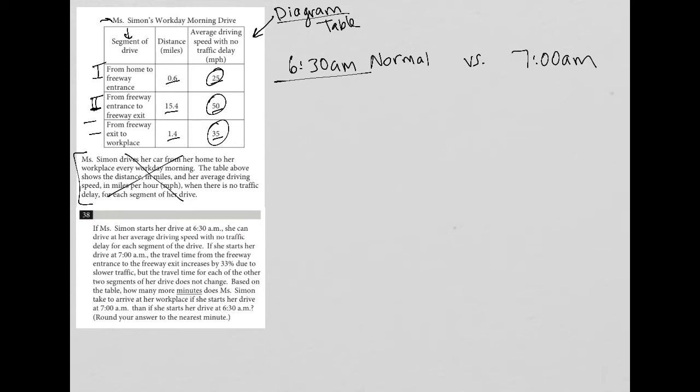Let's call the first segment phase one and the third segment phase three. Phase two, if she leaves at 7 AM, increases by 33% due to slower traffic.